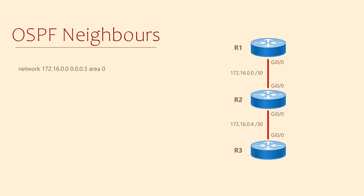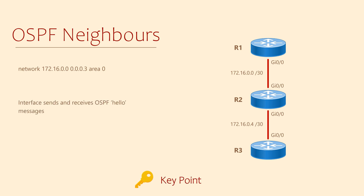By entering the network command, we told the router to enable OSPF on any interface that matches the network and wildcard mask, and put them into area 0. There was one interface that matched this criteria on router R1. This caused two things to happen. The router started sending hello messages, often using multicast, on interface gig 0.0. It also starts processing any hello messages that it receives, rather than ignoring them. These hello messages enable the two routers to find each other and become neighbors. The second thing the network command does is advertise this interface's network, enabling other OSPF routers to learn about this network and how to get there.